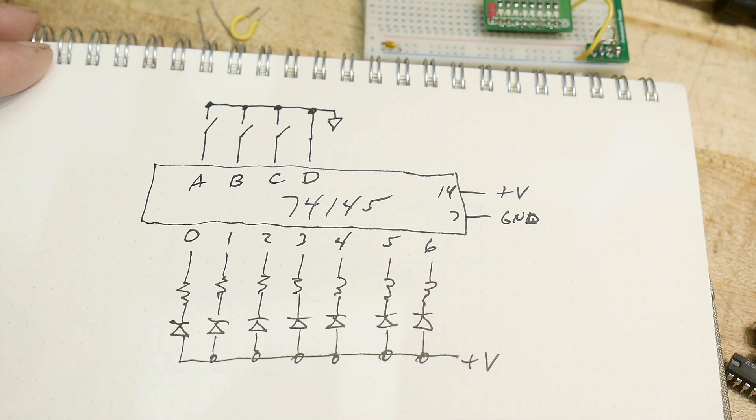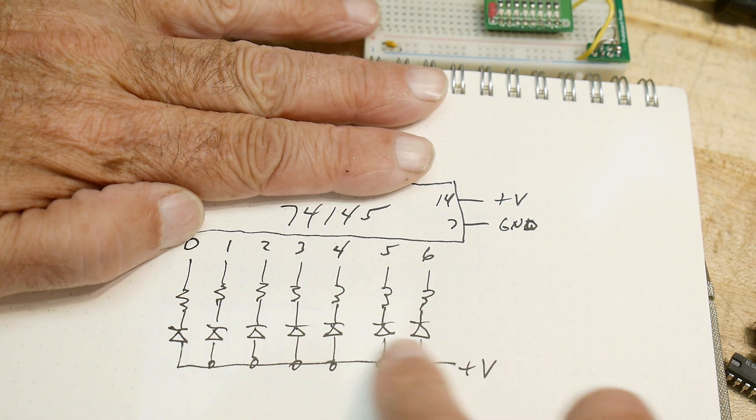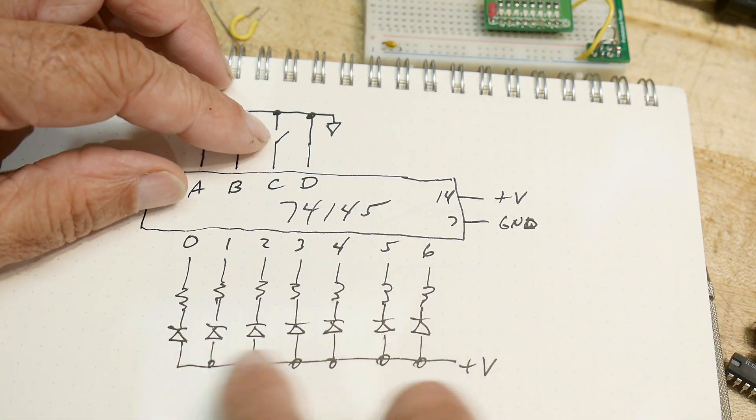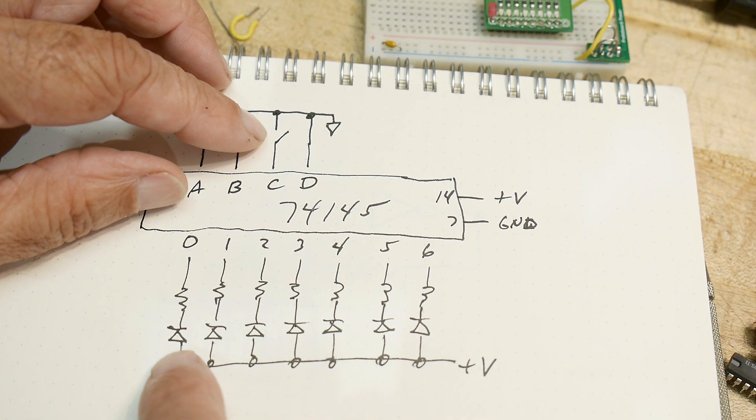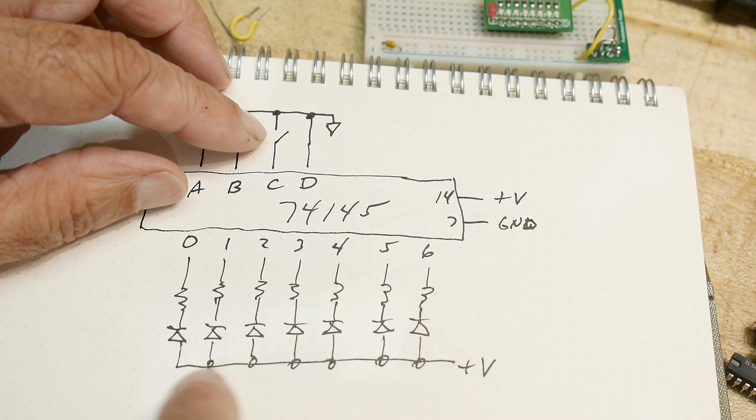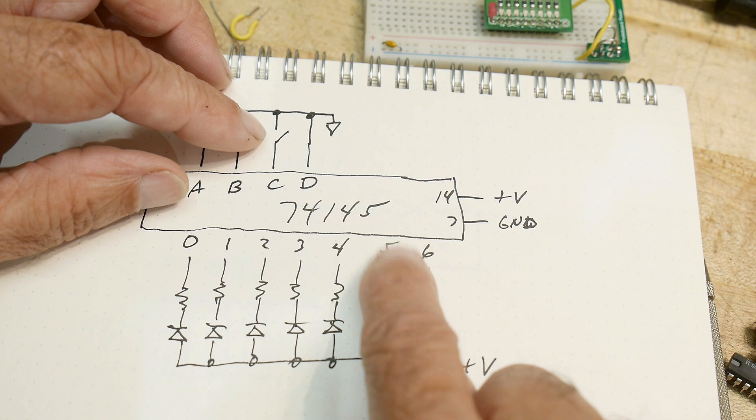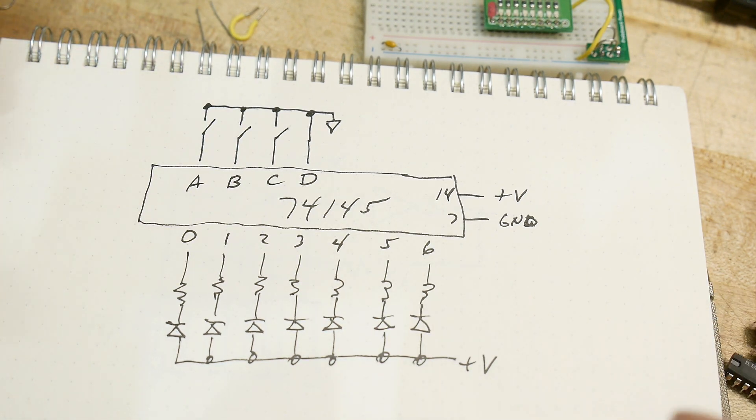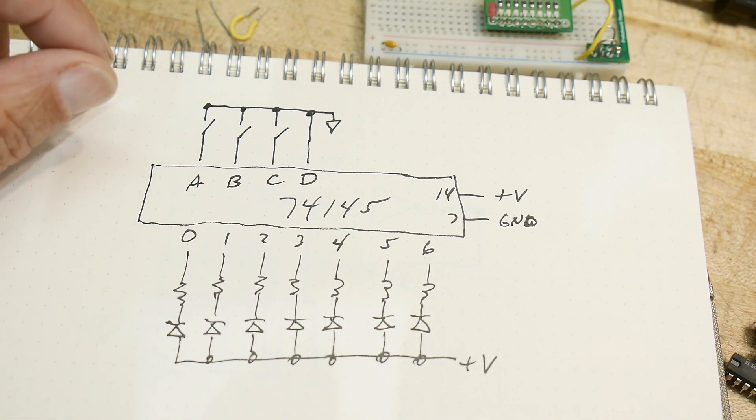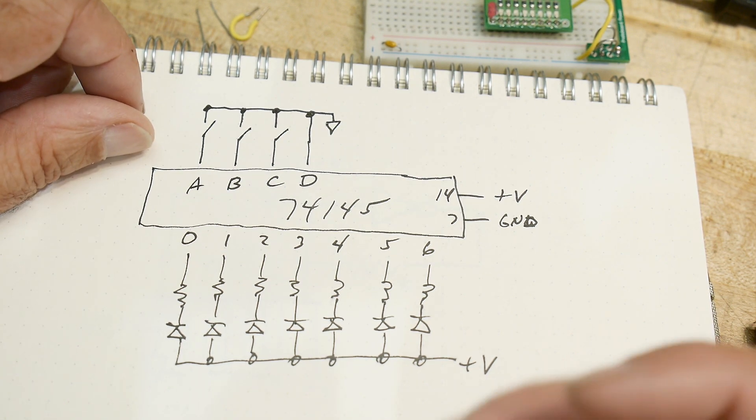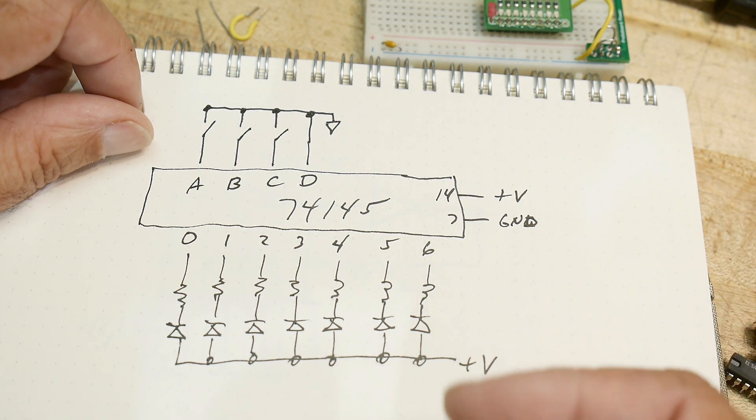All right, so this is the circuit that I'm going to hook up. I'm going to have LEDs here. Remember they're low true so they're going to be a common anode and then we'll pull down as we go along. And in general in the old TTL days you can pull down with fairly good current but you can't pull up.